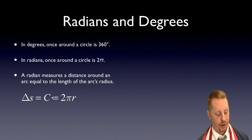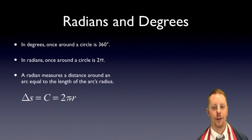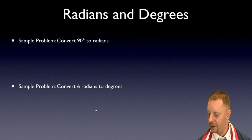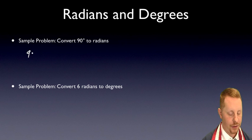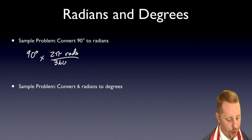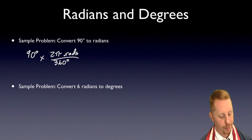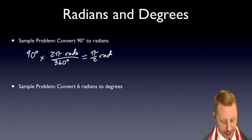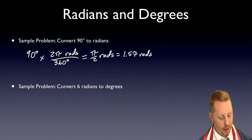A linear displacement once around a circle is the circumference C, or 2π times the radius of that circular path. For example, to convert 90 degrees to radians, we multiply 90 degrees by 2π radians over 360 degrees — which is really multiplying by 1, since 2π radians equals 360 degrees. That gives us π over 2 radians, or approximately 1.57 radians. Pretty straightforward.